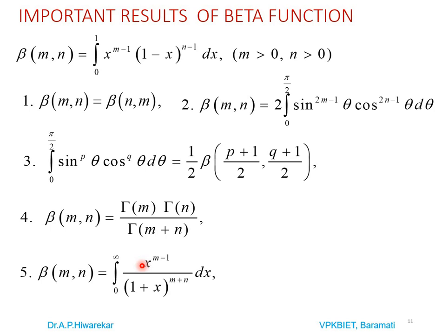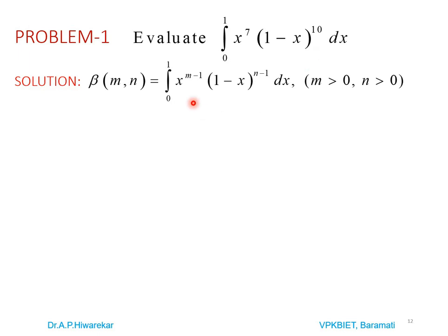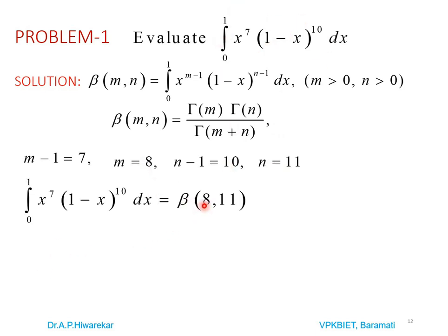Problems on Beta Function. Problem 1: Evaluate the integral from 0 to 1 of x^7·(1−x)^11 dx. To evaluate this, we compare the integral with Beta(m,n) = ∫x^(m−1)(1−x)^(n−1)dx from 0 to 1. Comparing: m−1 = 7 so m = 8, and n−1 = 11 so n = 12. The given integral is therefore Beta(8, 12).